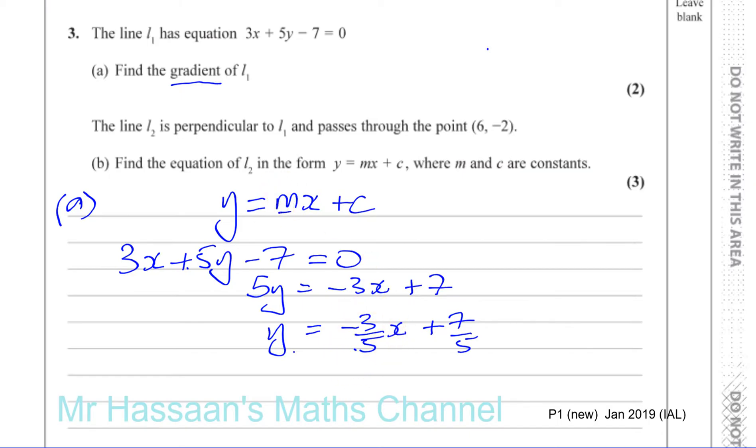So we can see here that the gradient is the coefficient of x. y equals mx plus c, that's the gradient. So we can say m is equal to minus 3 over 5. Therefore, we can say the gradient of the line is minus 3 over 5. So there's the answer to part a.